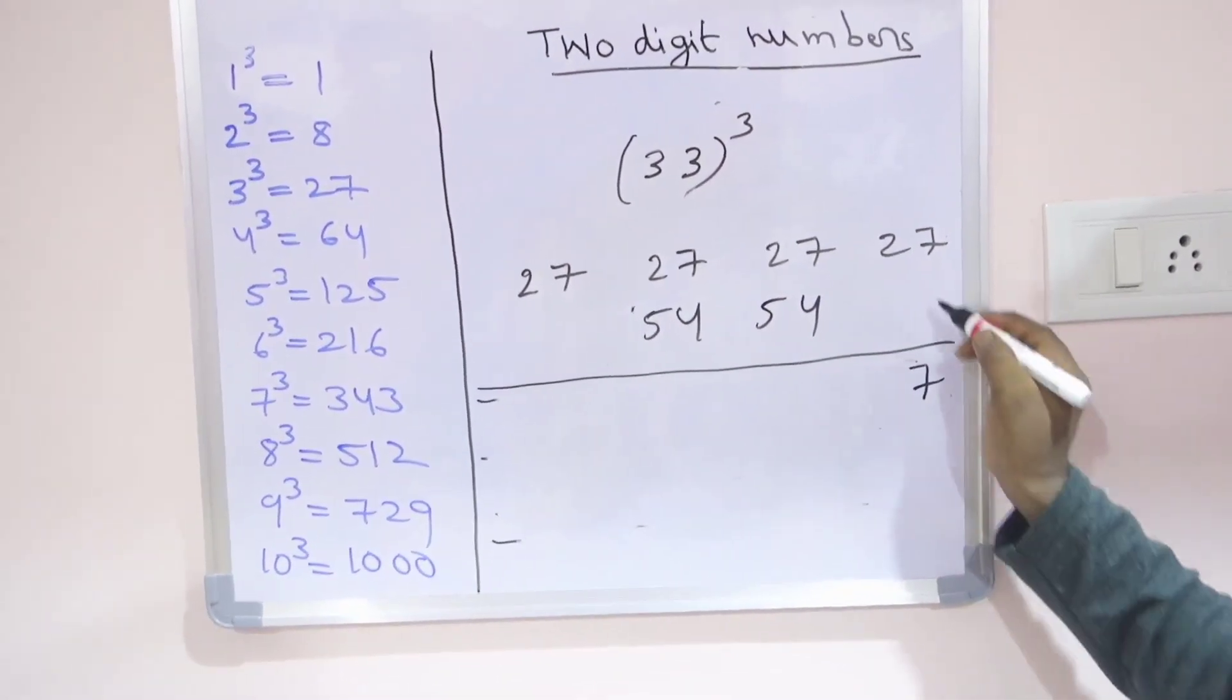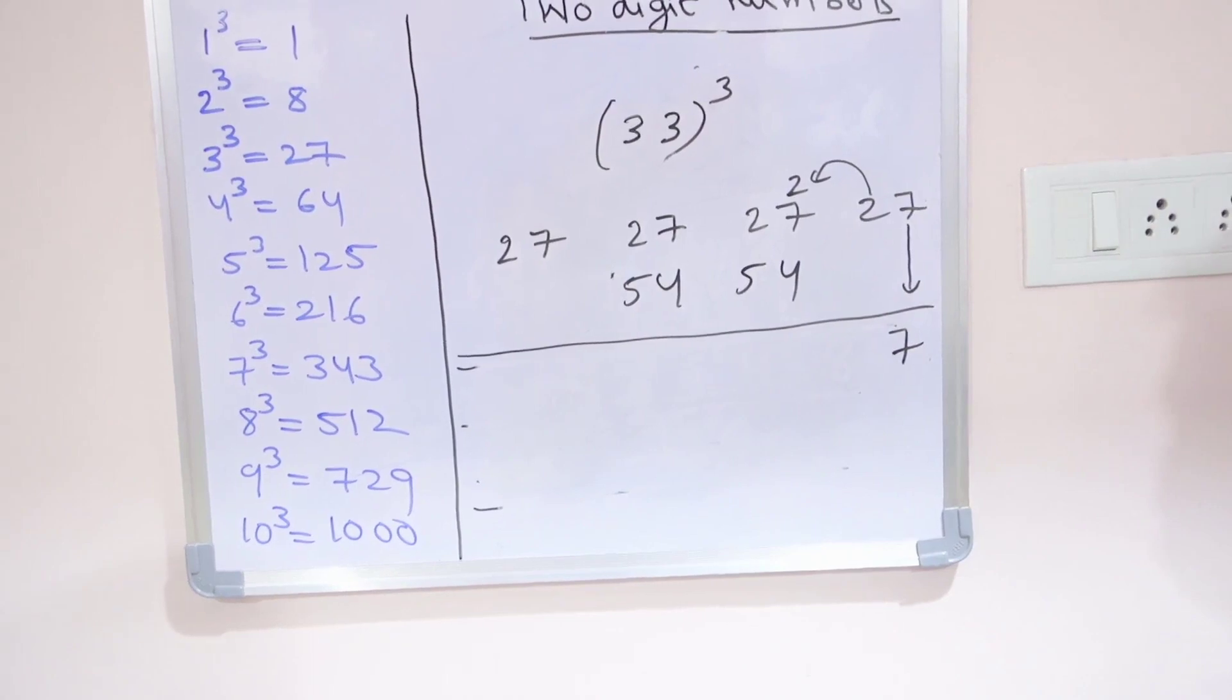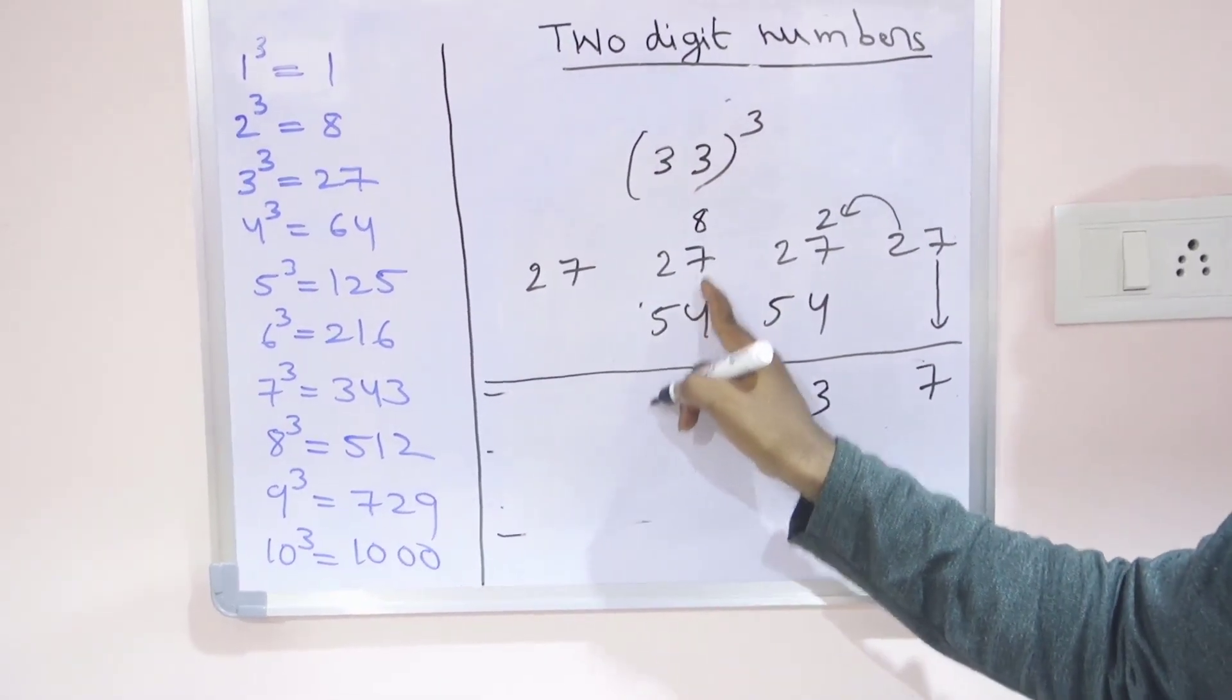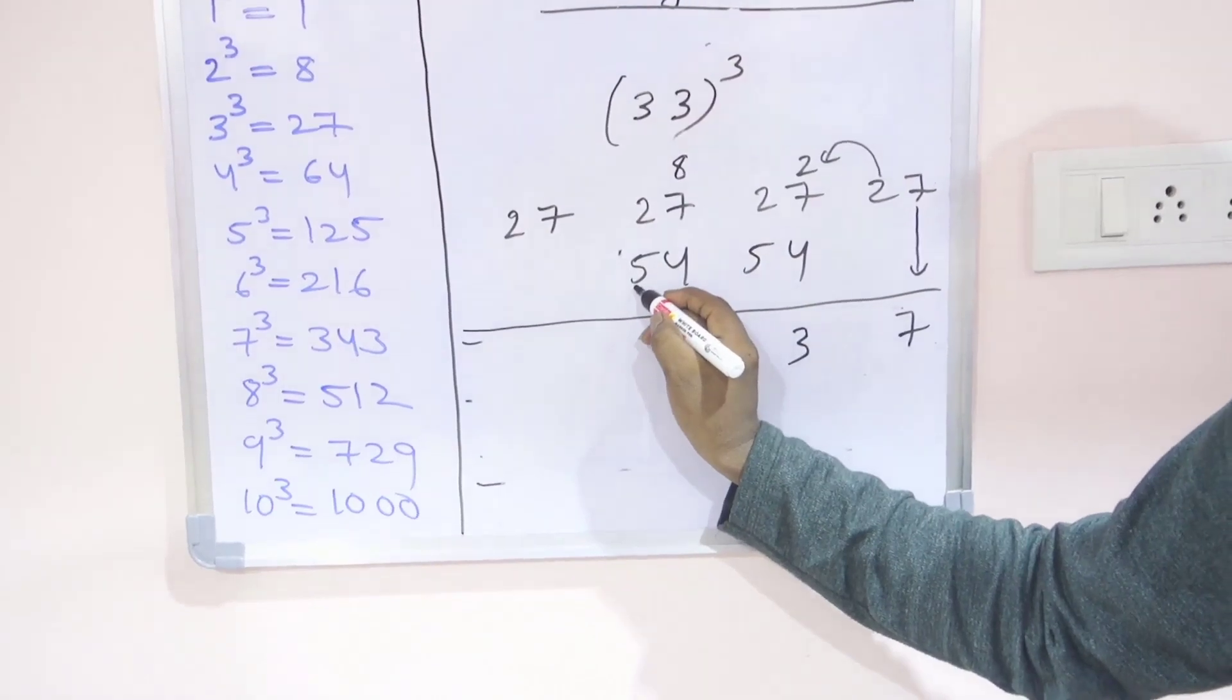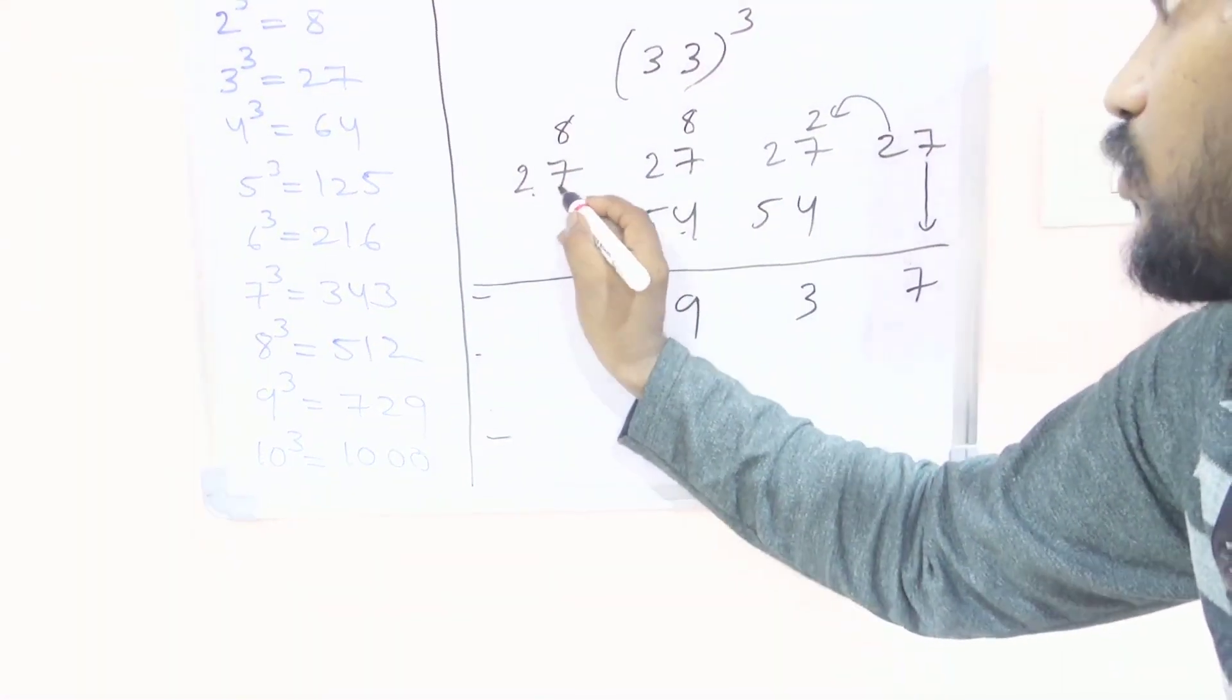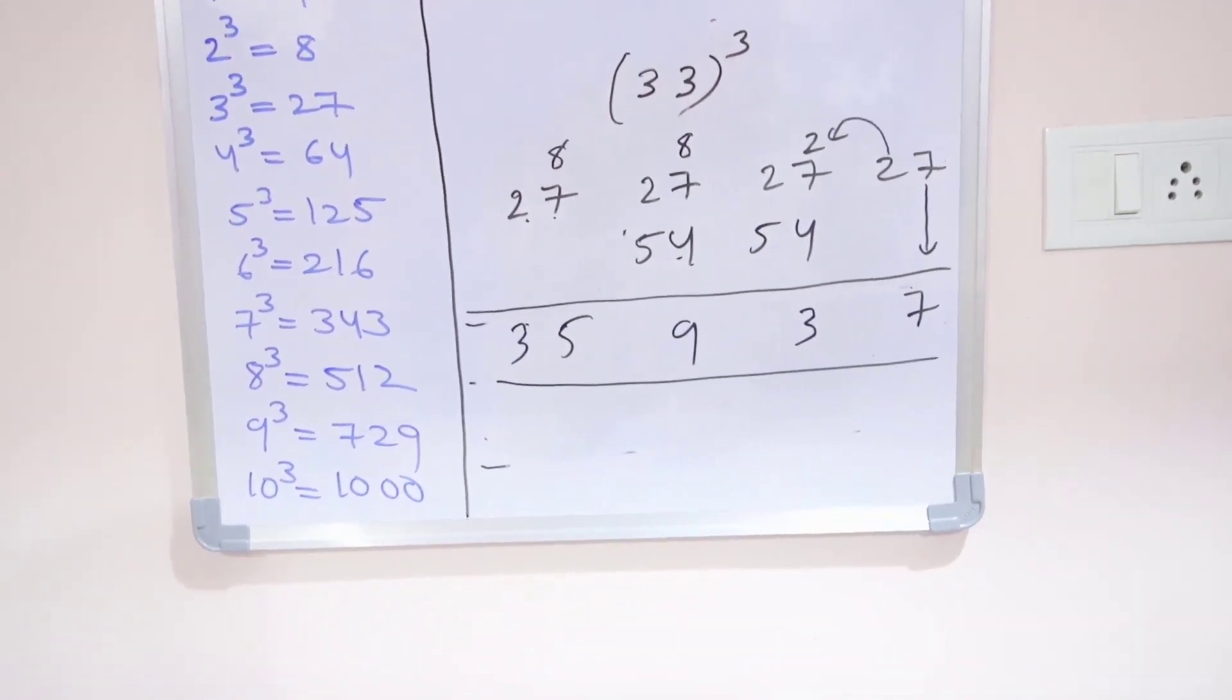Again add. 7 first write, last number only. And add to this here. 54 plus 27 is 81, 81 plus 2 is 83, write 3, carry 8. 54 plus 8 is 62, 62 plus 27 is 89, write 9, carry 8. 27 plus 8 is 35. So 35937 is the cube of 33.